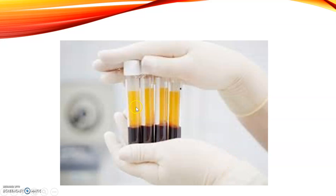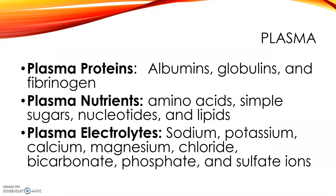Plasma is the yellow portion — 55% of blood volume. Albumin is the smallest of the proteins, but the most plentiful — about 60% of the proteins that make up the plasma. It helps regulate water movement between blood and tissues, helps control blood volume and blood pressure, and maintains the osmotic condition that favors recovery of water that has been forced out of the capillaries and into the surrounding tissue.